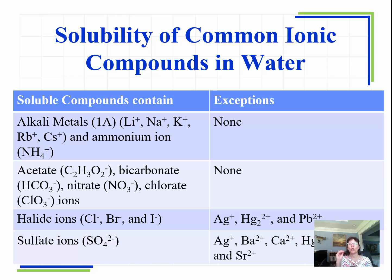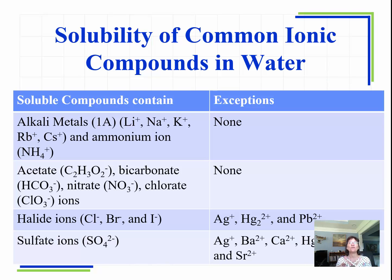So we learned how to determine if a compound is soluble or insoluble. These are ionic compounds, because this is going to help us come up with the products of our first type of reaction that we need to know — and that's the precipitation reaction.